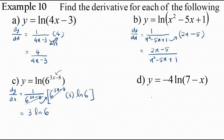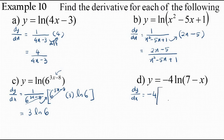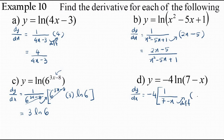Part d: y equals negative 4 ln(7 − x). The negative 4 is a constant, so we rewrite it and differentiate ln(7 − x). We get 1 over (7 − x), and differentiating (7 − x) gives negative 1. So the final answer is 4 over (7 − x).